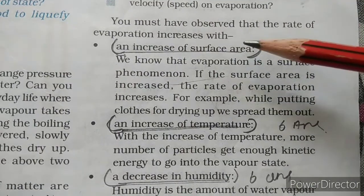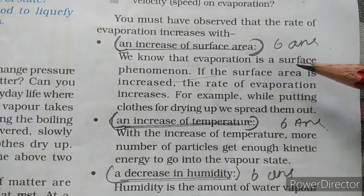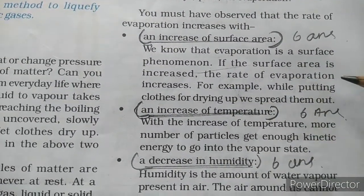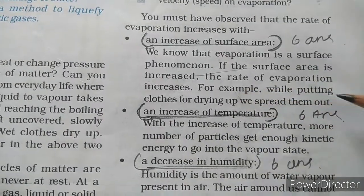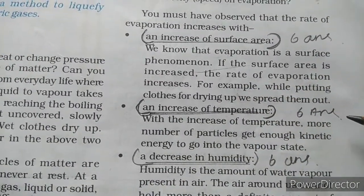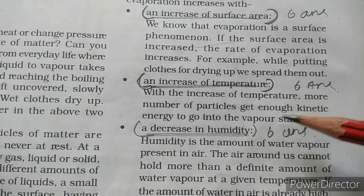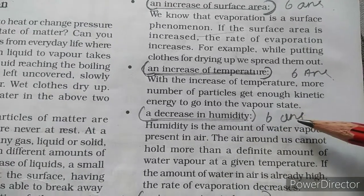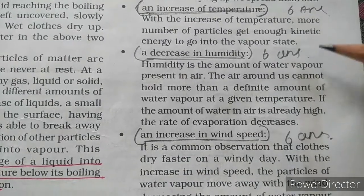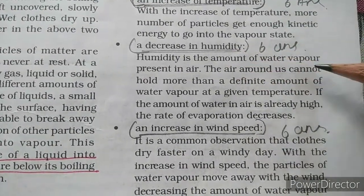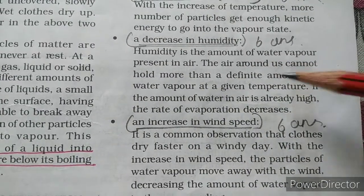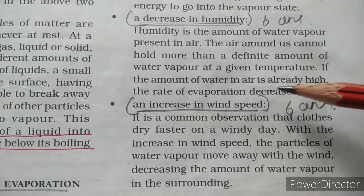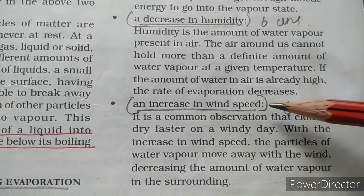The rate of evaporation increases with an increase of surface area — evaporation is a surface phenomenon. For example, while drying clothes, we spread them out. With increase of temperature, more particles gain enough kinetic energy to go into the vapor state. Humidity is the amount of water vapor present in air; if the amount of water vapor in air is already high, the rate of evaporation decreases.